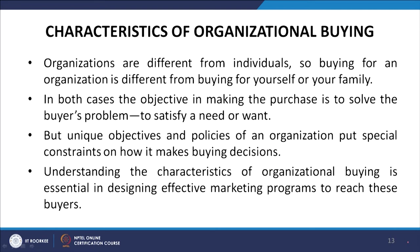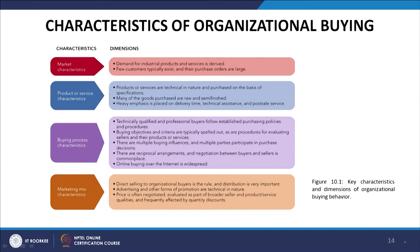Let us look at the characteristics of organizational buying. Organizations are different from individuals, so buying for an organization is different from buying for yourself or your family. In both cases the objective is to solve a buyer's problem — to satisfy a need or want. But the unique objectives and policies of an organization put special constraints on how it makes buying decisions. The characteristics fall under market characteristics, product and service characteristics, buying process characteristics and marketing mix characteristics.